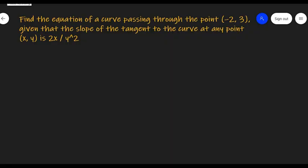In this video let's find the equation of a curve passing through the point (-2, 3), given that the slope of the tangent to the curve at any point (x, y) is 2x upon y squared.